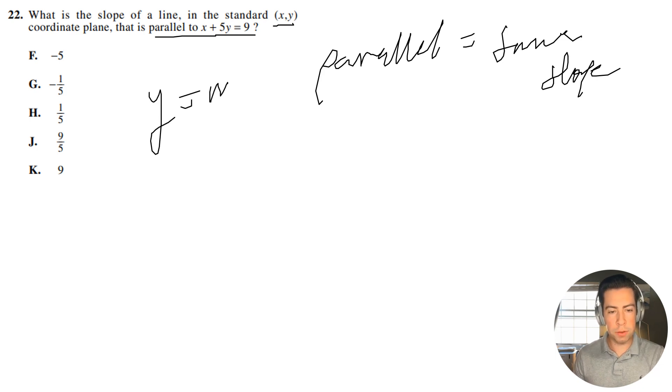Let's go ahead and write this out in the form y equals mx plus b. Remember that our slope is going to be this value that's multiplied by x. We can call it m. We have x plus 5y equals 9.